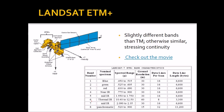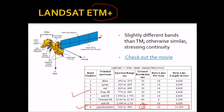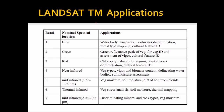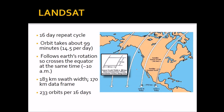ETM+ has 8 bands with panchromatic also available, giving a 15-meter resolution image. It has slightly different bands than the thematic mapper ETM+, but is otherwise somewhat similar to its predecessor. Panchromatic is 15 meters. Landsat has wide varieties of thematic applications, right from blue to mid-IR. It has a 16-day repeat cycle.